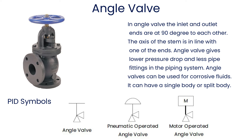In an angle valve, the inlet and outlet ends are at 90 degrees to each other. The axis of the stem is in line with one of the ends. Angle valve gives lower pressure drop and less pipe fittings in the piping system. Angle valves can be used for corrosive fluids and can have a single body or split body.